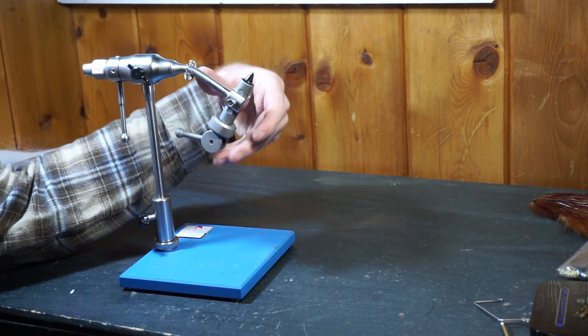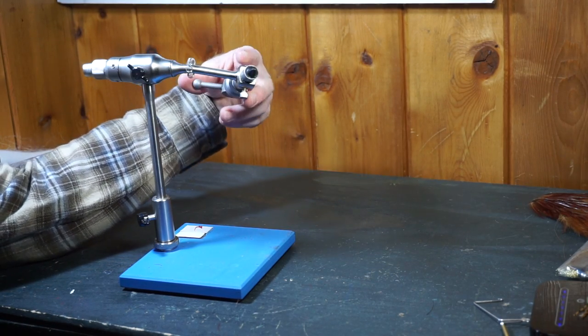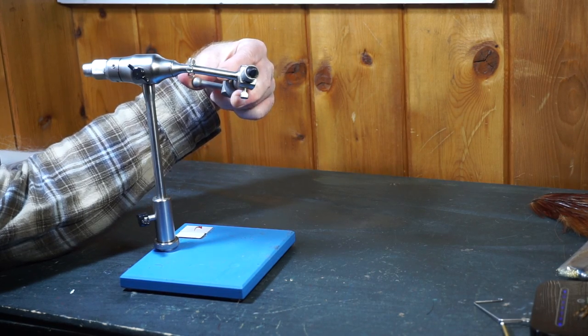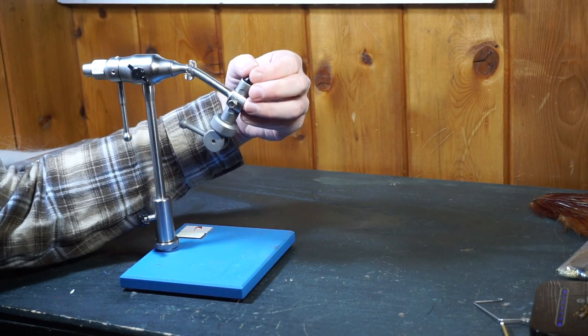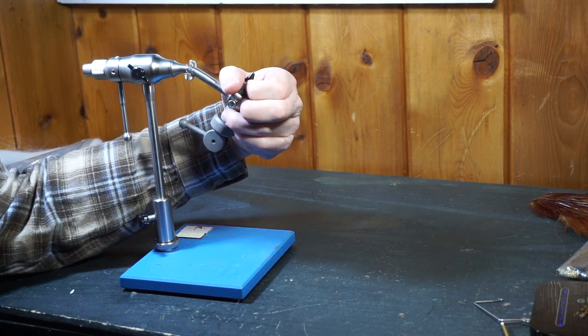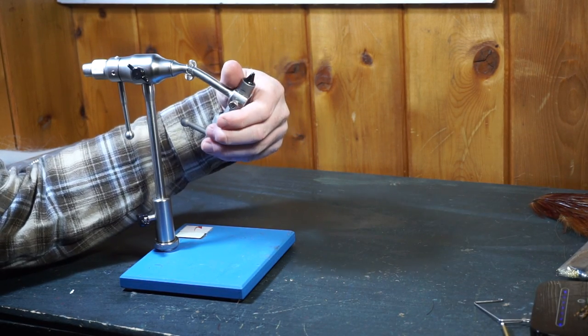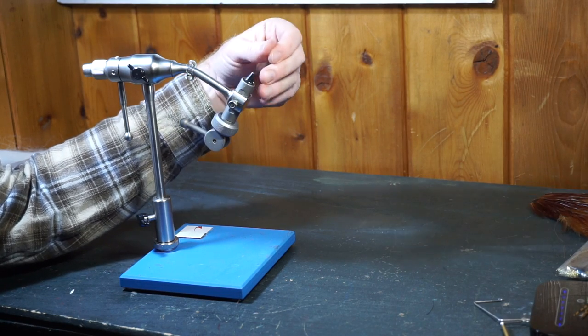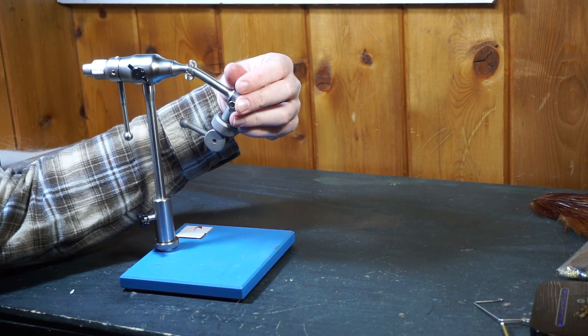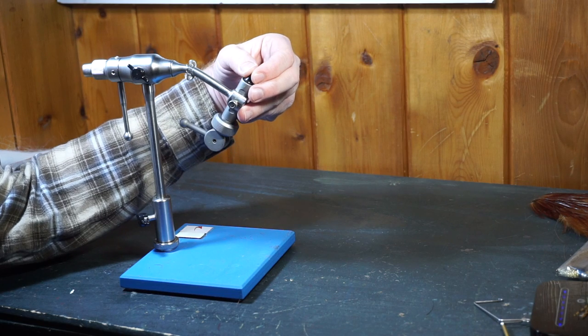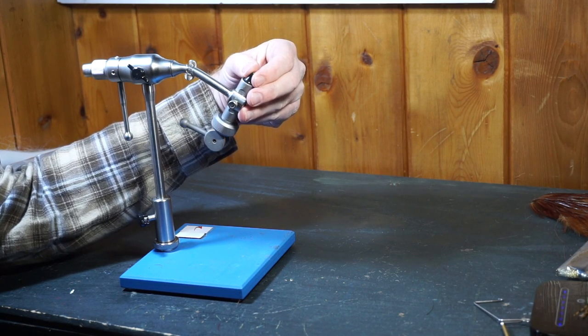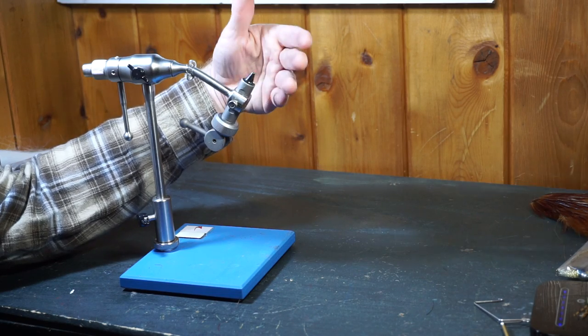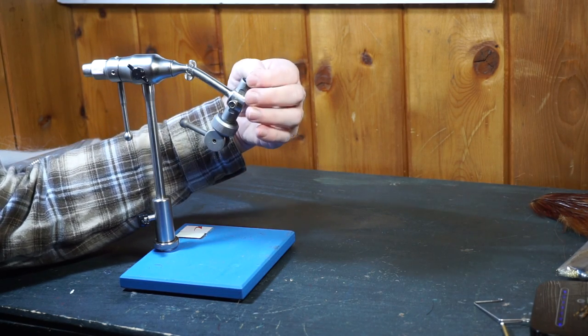I find also the very tip of the vise doesn't have as much holding power as a little further down. So there's a little gap, very slight, but a little gap there. And when we're talking flies that are, you know, the wire is almost like human hair size. That makes a difference.